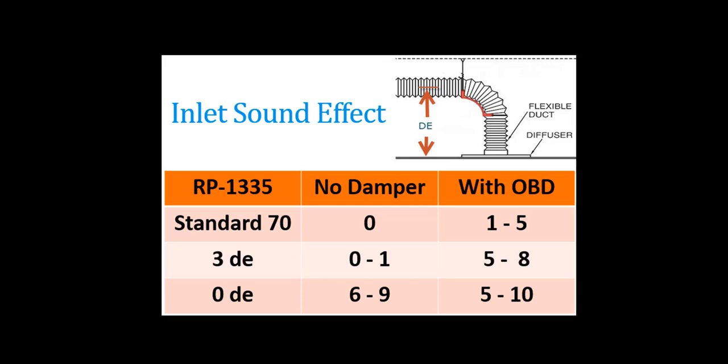The takeaways that we get from this is twofold. First is that inlet conditions do have an effect on the overall system, and thus we stress the importance of following good practices when using flex duct. Secondly, adding a damper affects the sound, and whereas we didn't discuss pressure in this podcast, the pressure also sees similar effects.